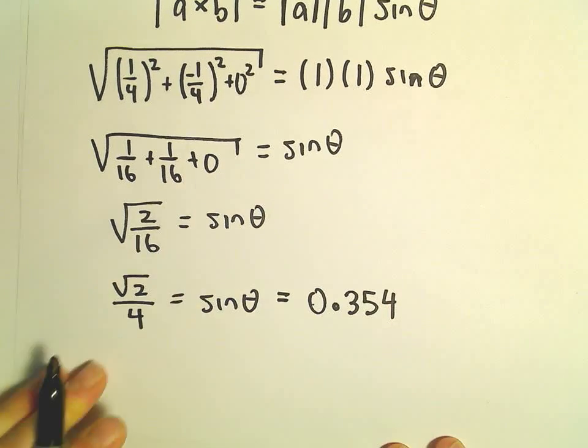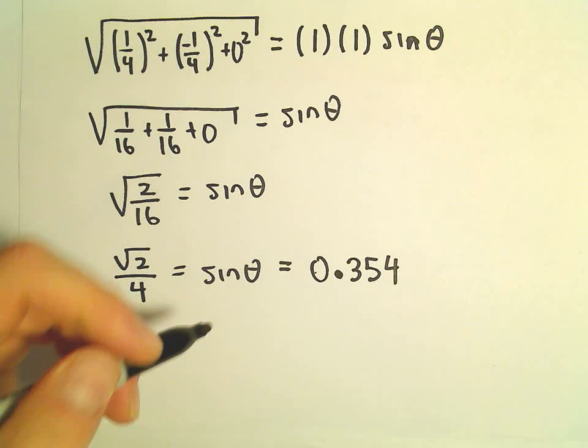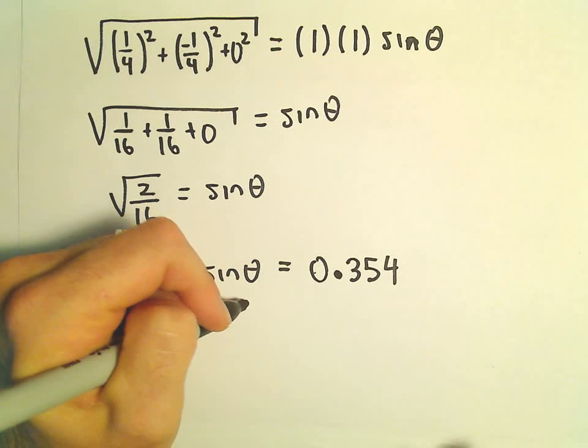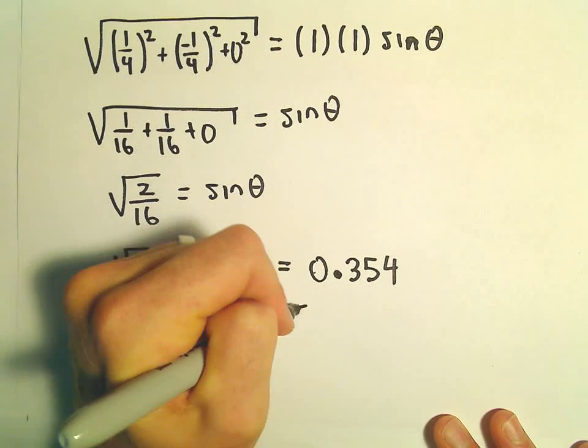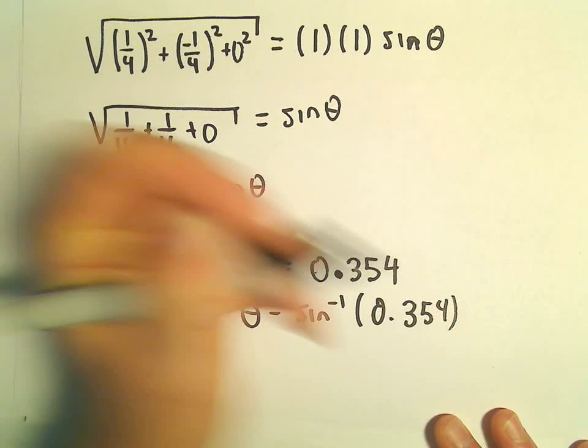We can round it, point zero three five four. So now I'm just going to use the inverse sine of both sides to solve. We'll get theta equals arcsine of zero point three five four.